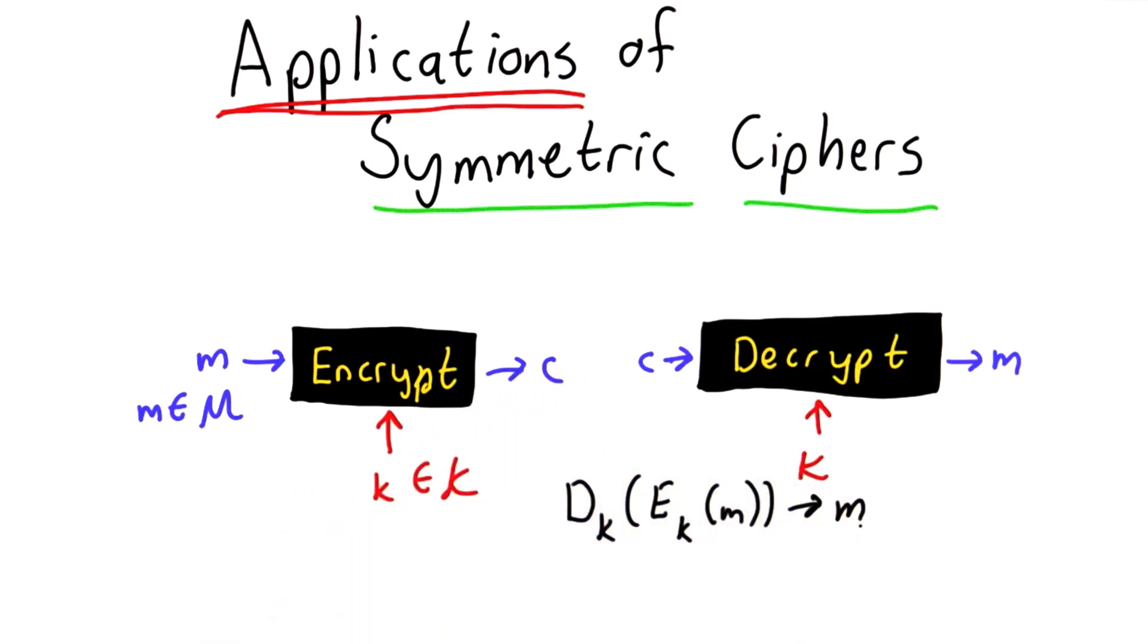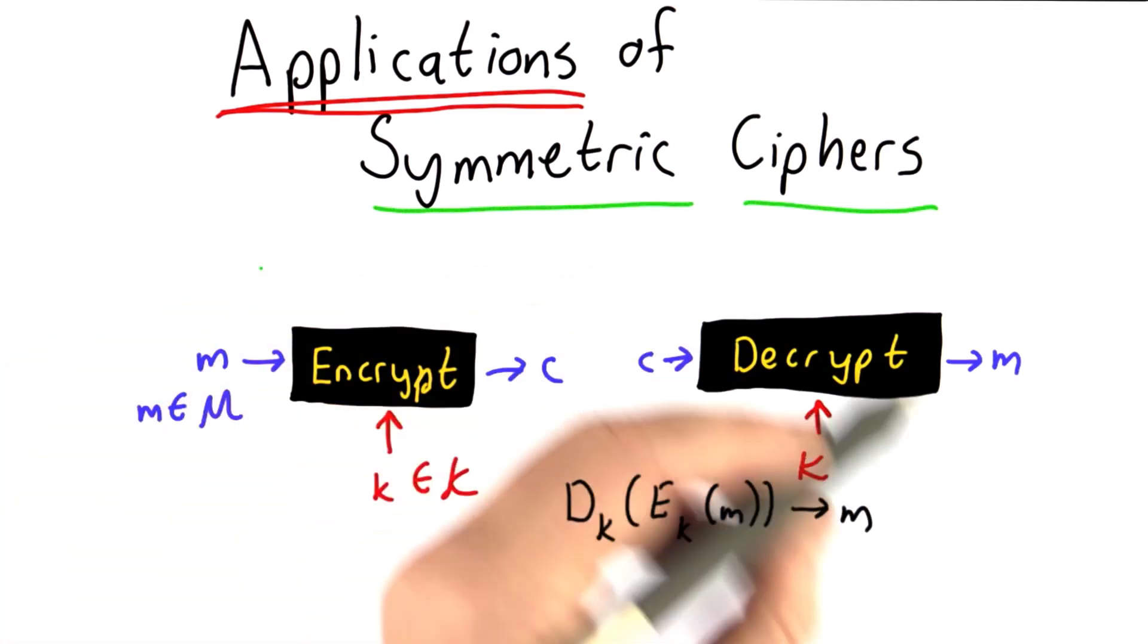For the rest of this unit, we're going to assume that we have some function that provides encryption and decryption. AES is a good choice for most applications, and we're going to look at how to use these functions to solve problems.